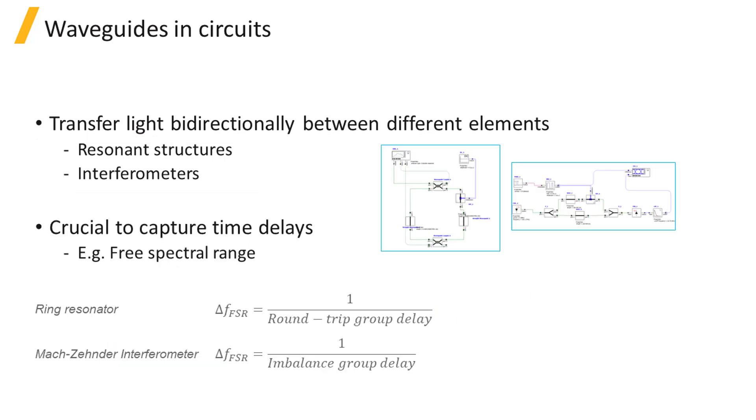In many applications, it is crucial to capture the time delay associated with propagation, also called the group delay, to get accurate circuit simulation results. For example, the free spectral range frequency of a ring resonator is inversely proportional to the round-trip group delay, and the free spectral range of a Mach-Zehnder interferometer is inversely proportional to the group delay difference between the two arms.